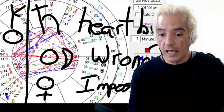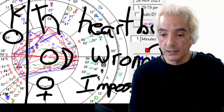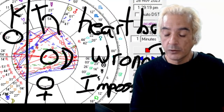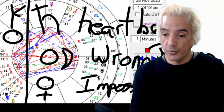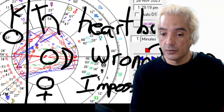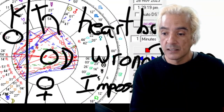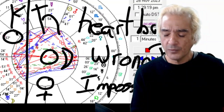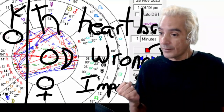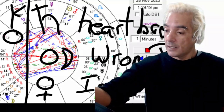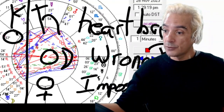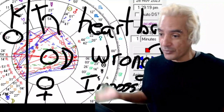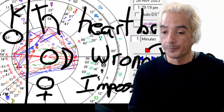This clash increases the odds of breakup and divorce to incredibly high proportions. It's usually the person who has the Saturn who creates the heartbreak, because the Saturn person does it to the Chiron person — the Chiron person has the wound.